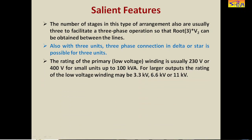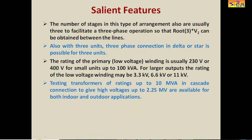The rating of the primary, that is the low voltage winding, is usually 230 volts or 400 volts for small units up to 100 kVA. For larger outputs, the rating of the low voltage windings may be 3.3 kV, 6.6 kV, or 11 kV. Testing transformers rated up to 10 MVA in cascaded connection can give high voltage up to 2.25 MV and are available for both indoor and outdoor applications. For a single unit the output voltage is 750 kV, so 750 kV plus 750 kV plus 750 kV gives 2.25 MV.